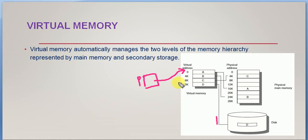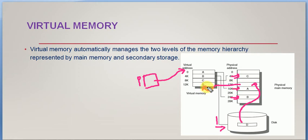For example, data A is present in one location of primary memory, B in another, C in another, but D is not currently available in primary memory — it is in secondary storage. To access D, it needs to be moved into a primary memory location so it can be accessed by the processor. Every time the processor initiates a program, it generates a virtual address that is converted into a physical address. If the data is not there, it is collected from secondary memory, and sometimes data is moved from primary to secondary to make room.